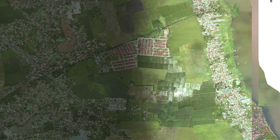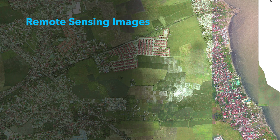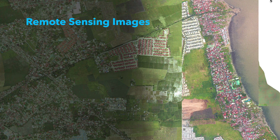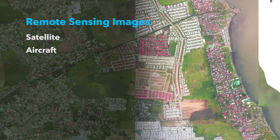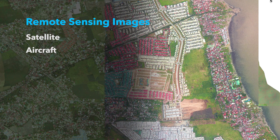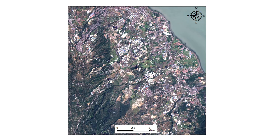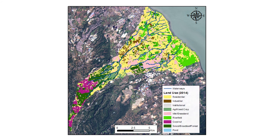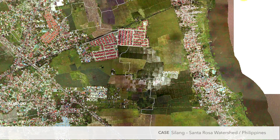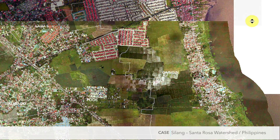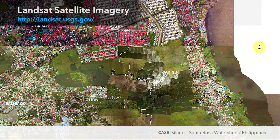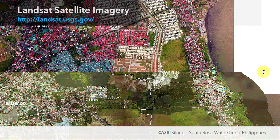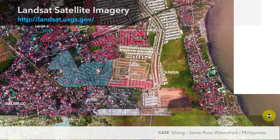Land use maps are usually produced through the processing of remote sensing images — images taken from satellites or aircraft. To produce land use maps from these images, we process the images pixel by pixel, and then we assign pixels to land use classes based on the amount of light reflected at different electromagnetic wavelengths. For the project in the Philippines, we produced a present day land use map by processing Landsat satellite imagery, which is freely available to the public and has a relatively fine resolution.